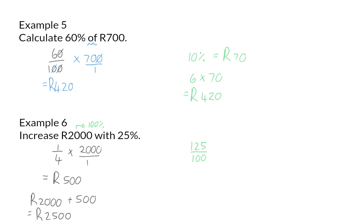125 percent of 2,000 rand. And now we can simplify by dividing the numerator and denominator by 100, and when I now multiply my numerator, I will immediately have the final answer of 2,500 rand.